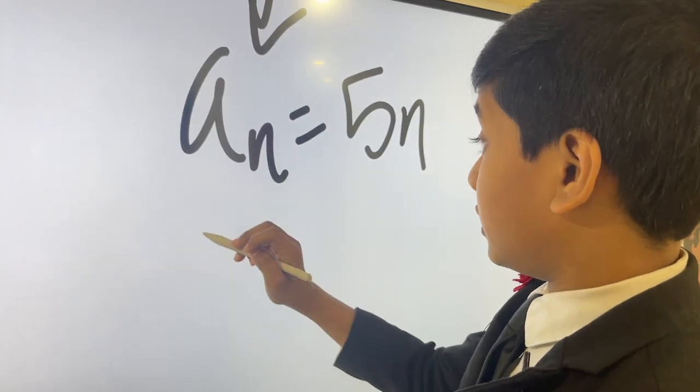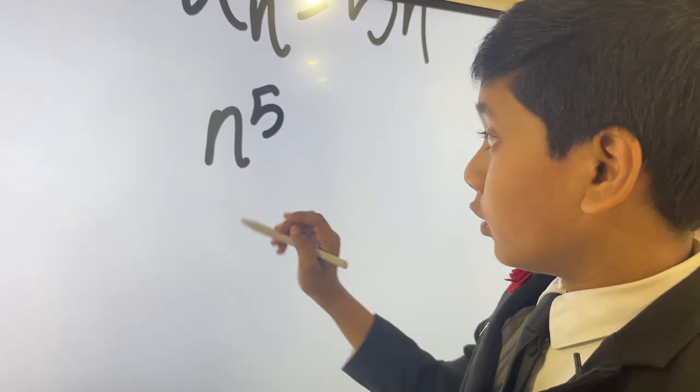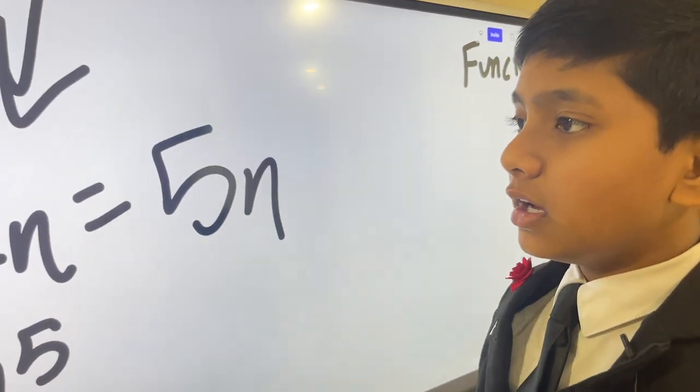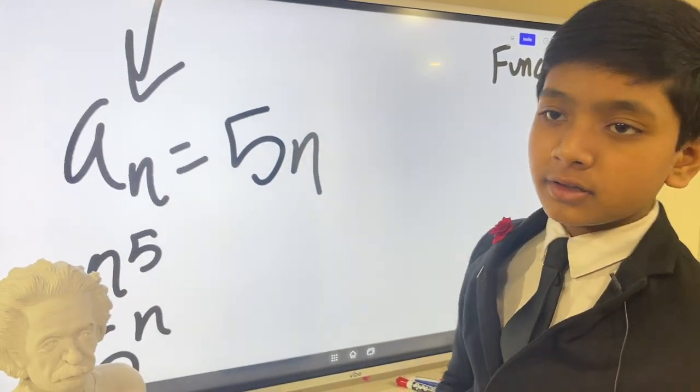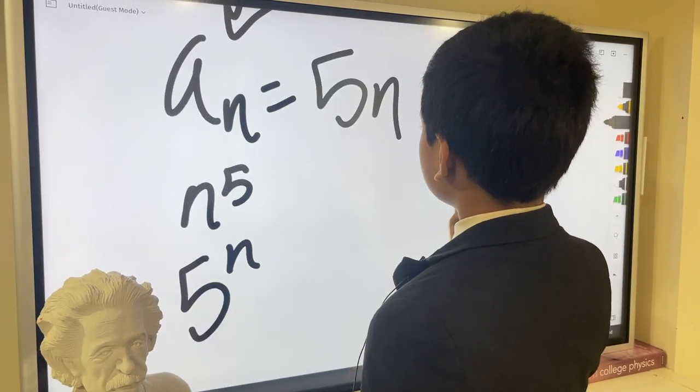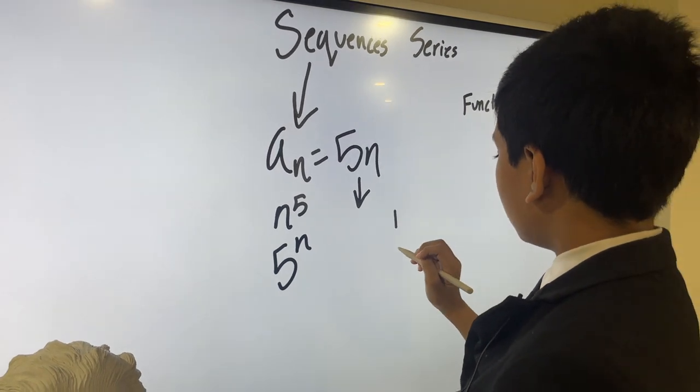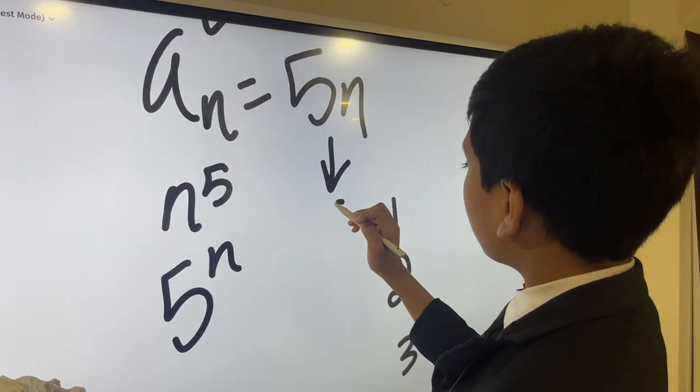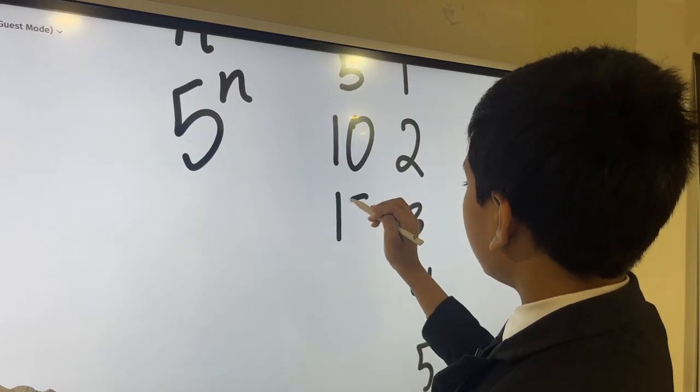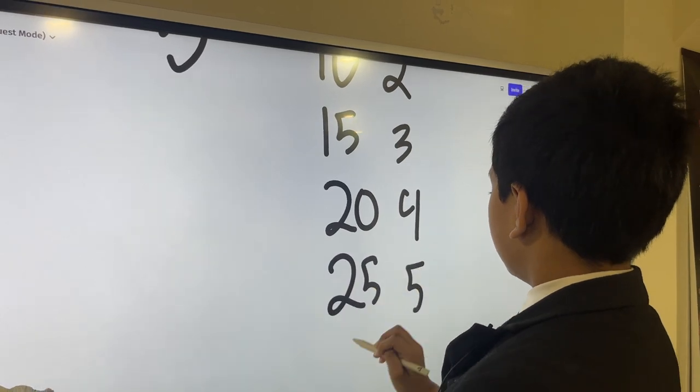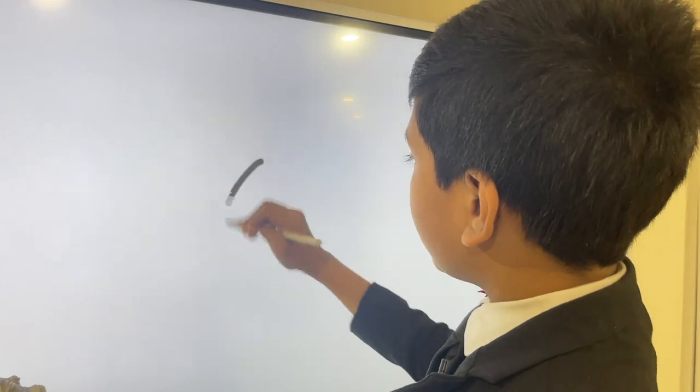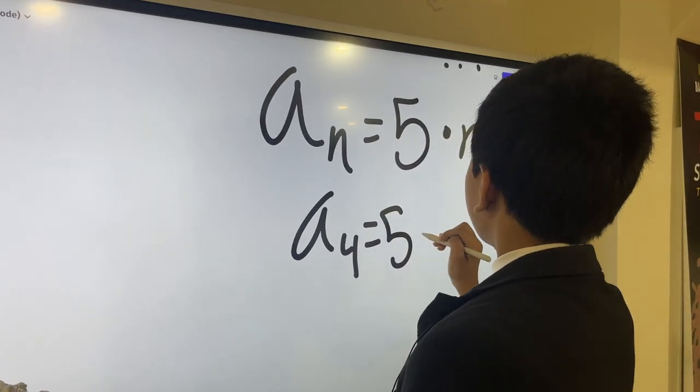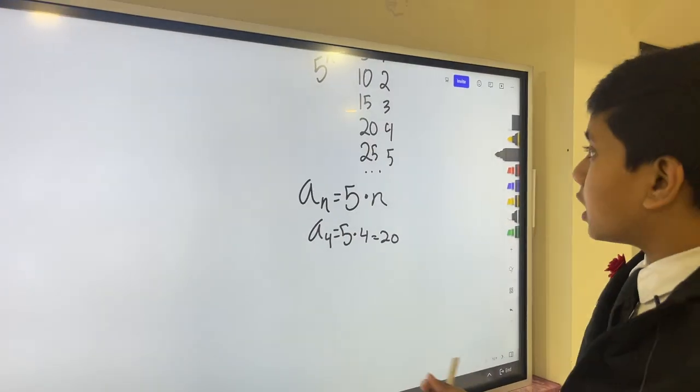It can just be anything relating to n, like 5n, or you could have n to the 5, which would grow very rapidly, or 5 to the n, which would also grow very rapidly. Just so I don't fry my brain trying to calculate values, I'm going to start with 5n. So let's list the values.